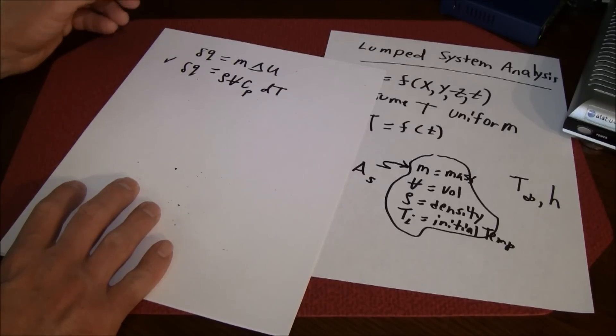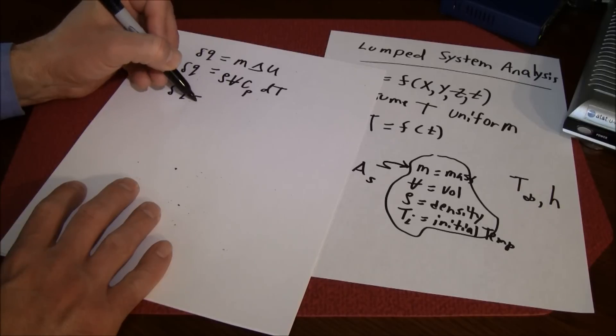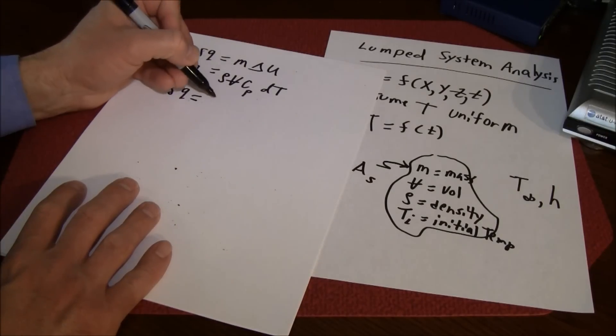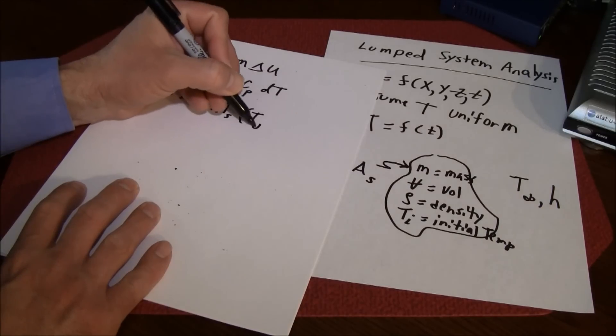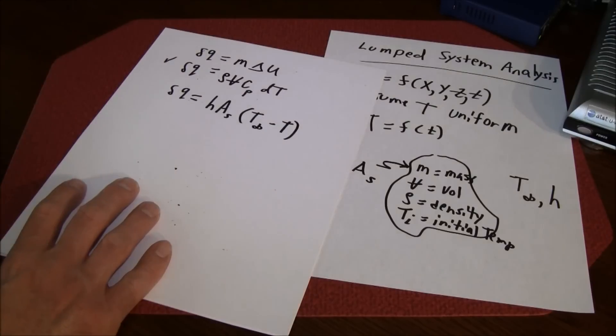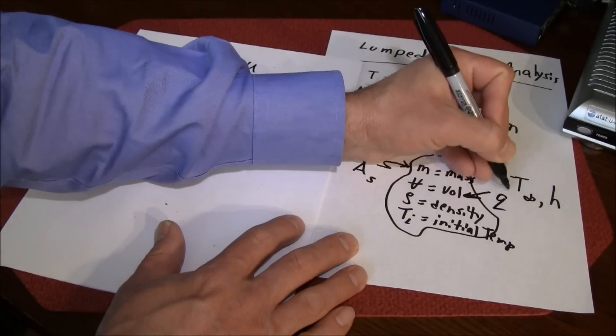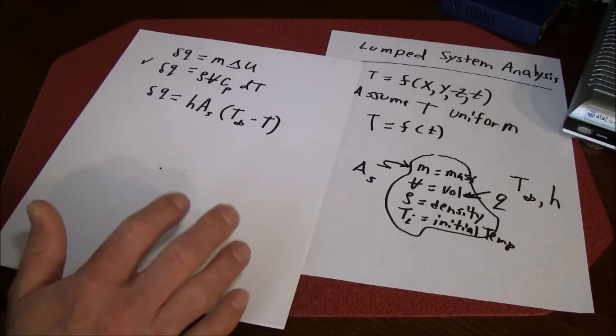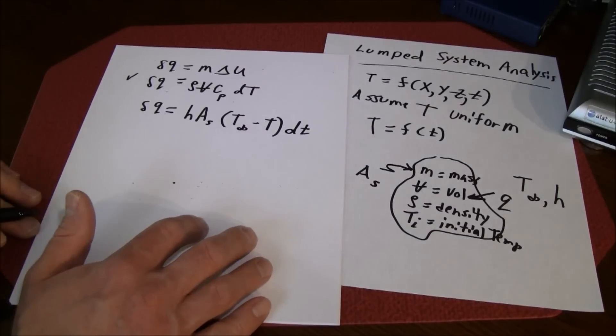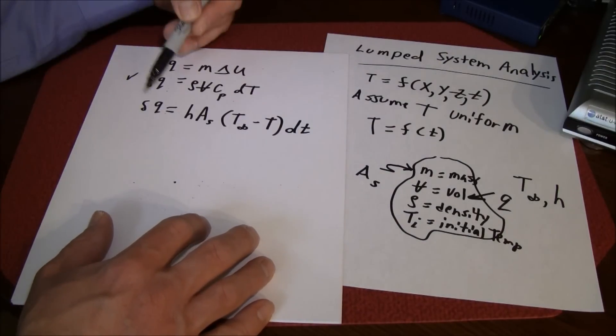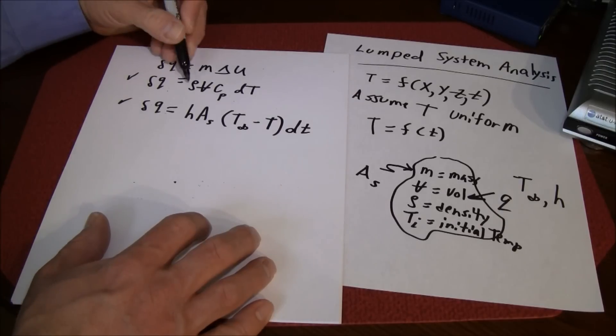That's one equation we have to calculate the heat transfer. Another one: Newton's law of cooling says that delta q is equal to h times the surface area times T infinity minus T. We'll assume the heat transfer is coming in for right now. This is a true statement and this is also a true statement from thermo.